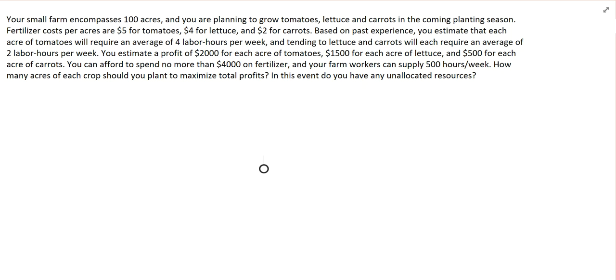Based on past experience, you estimate that each acre of tomatoes will require an average of 4 labor hours per week, and tending to lettuce and carrots will each require an average of 2 labor hours per week. You estimate a profit of $2,000 from each acre of tomatoes, $1,500 for each acre of lettuce, $500 for each acre of carrots.